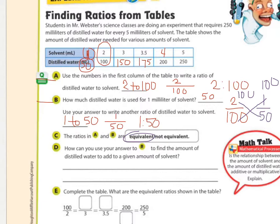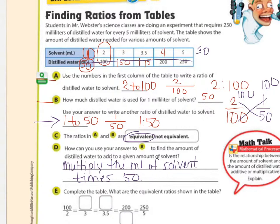How can you use your answer to B to find the amount of distilled water to add to a given amount? How can you use this? Like if I said, what if I needed 30 milliliters of solvent? Are you going to create a table all the way up to 30 to find the pattern and add 50 all the time down here? No. What did we do to get from the top to the bottom? We just multiplied times 50.